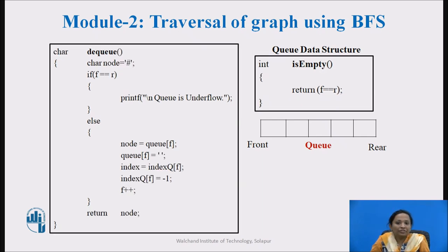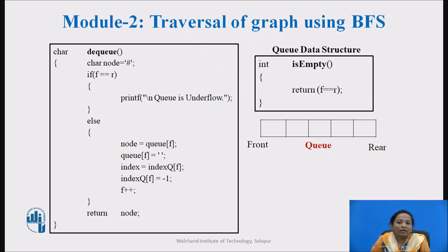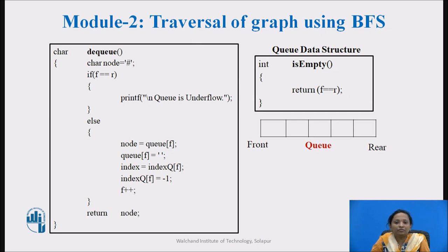The dequeue function returns the character removed from the queue along with the index position. During the dequeue operation, we check if the queue is empty: if front equals rear, then the queue is empty and we cannot remove any element, so a message is displayed. If the queue is not empty, we remove the node information from the queue and the index information from the index queue. The index information is required to get the label information about that node — that's why we maintain the index queue separately. After dequeue, front is incremented by 1 and the index queue values are updated to minus 1.